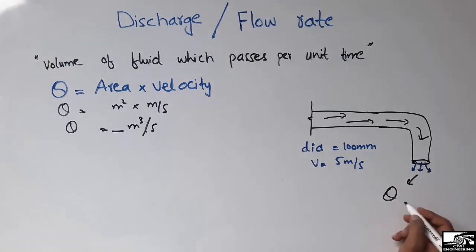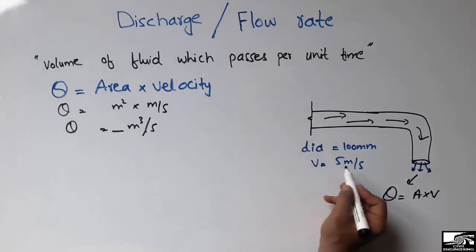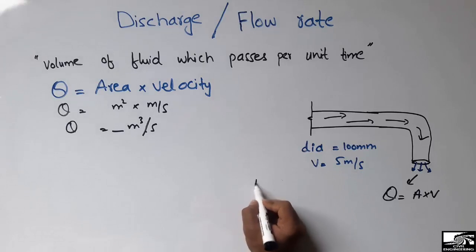We can find it by this formula: area into velocity. First we have to find the area of this pipe, so we can find easily the area.